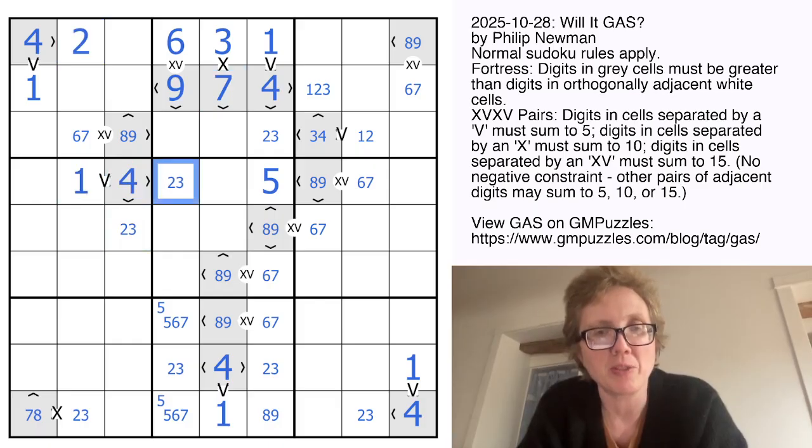And now neither of those can be 1 either. This now has to be a 2 because it's sharing a region with a 3. That makes this a 1 and makes this a 4. And in this region, I still need a 5 and an 8, which will go there and there.